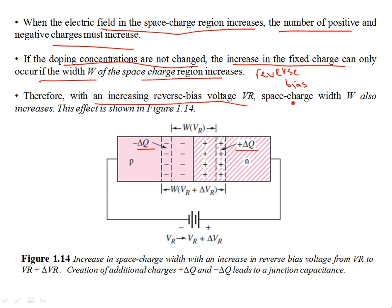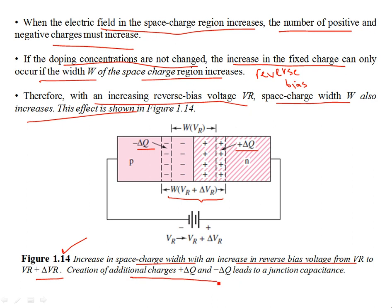With an increasing reverse bias voltage VR, the space charge width W also increases, as shown in figure 1.4. Due to the widening of this space charge region, you create a junction capacitance because of the additional charges. Increasing the reverse bias from VR to VR + ΔVR creates additional charges, and this leads to the junction capacitance. You can consider the depletion width as a parallel plate capacitor.